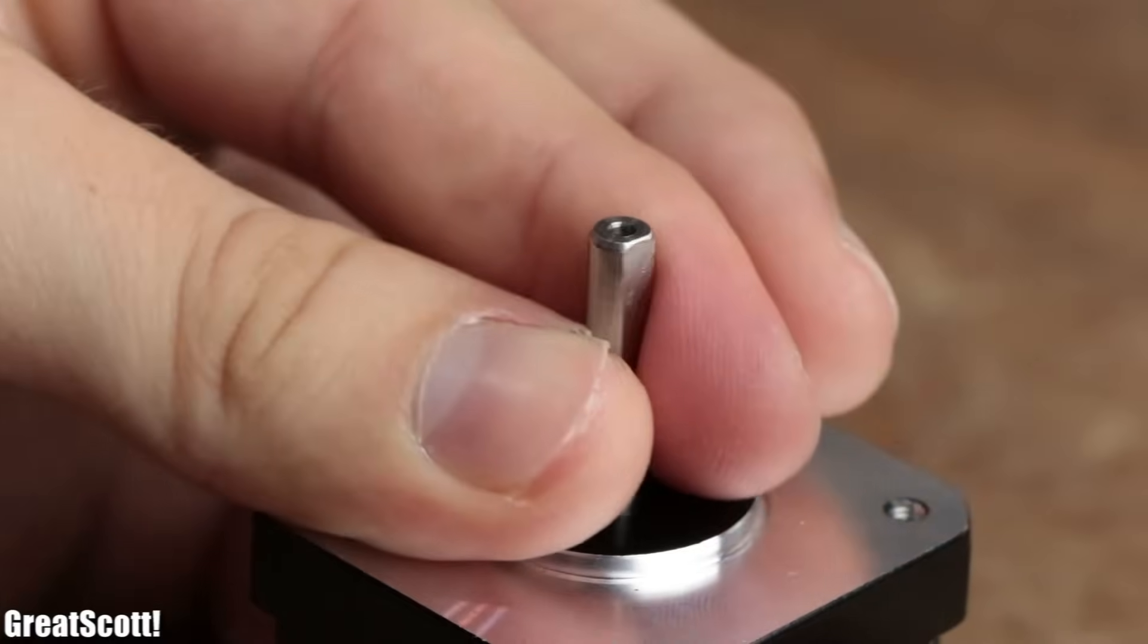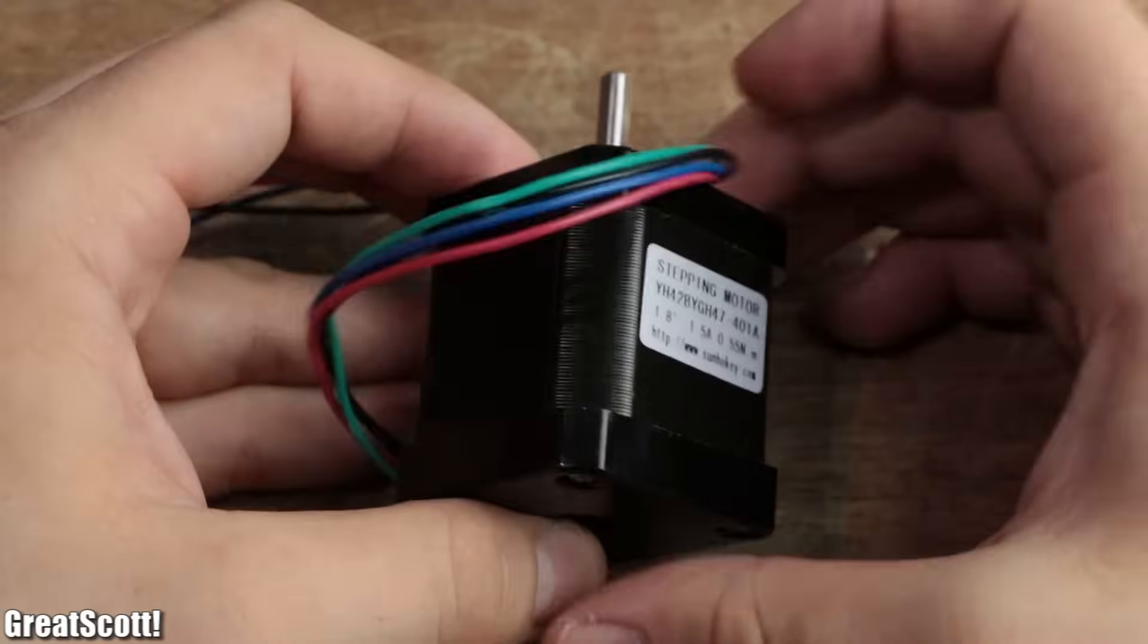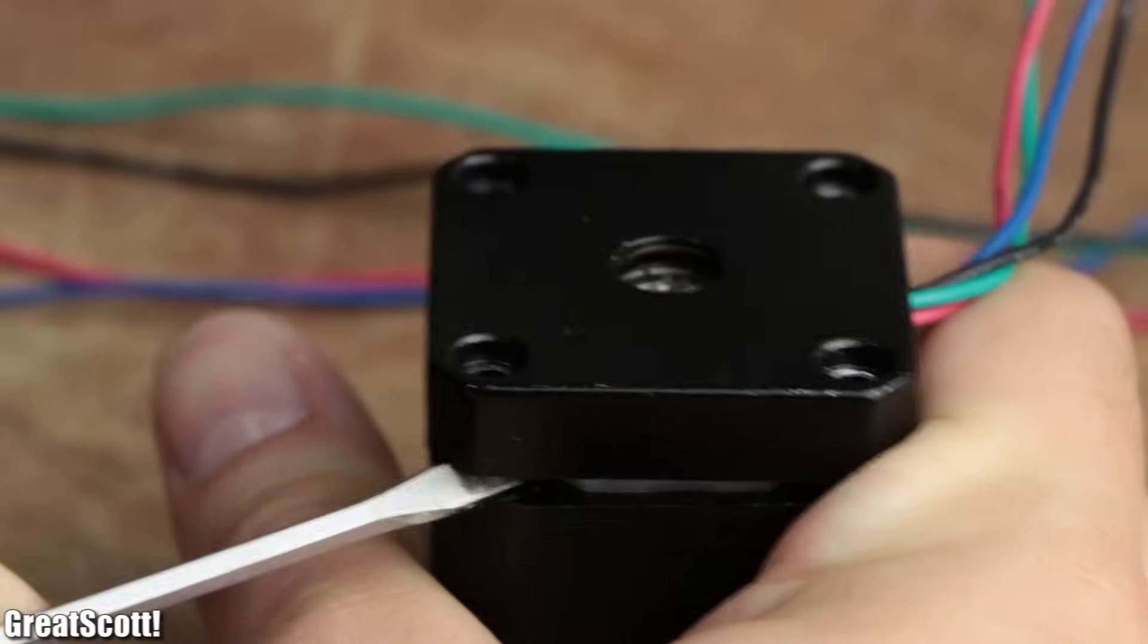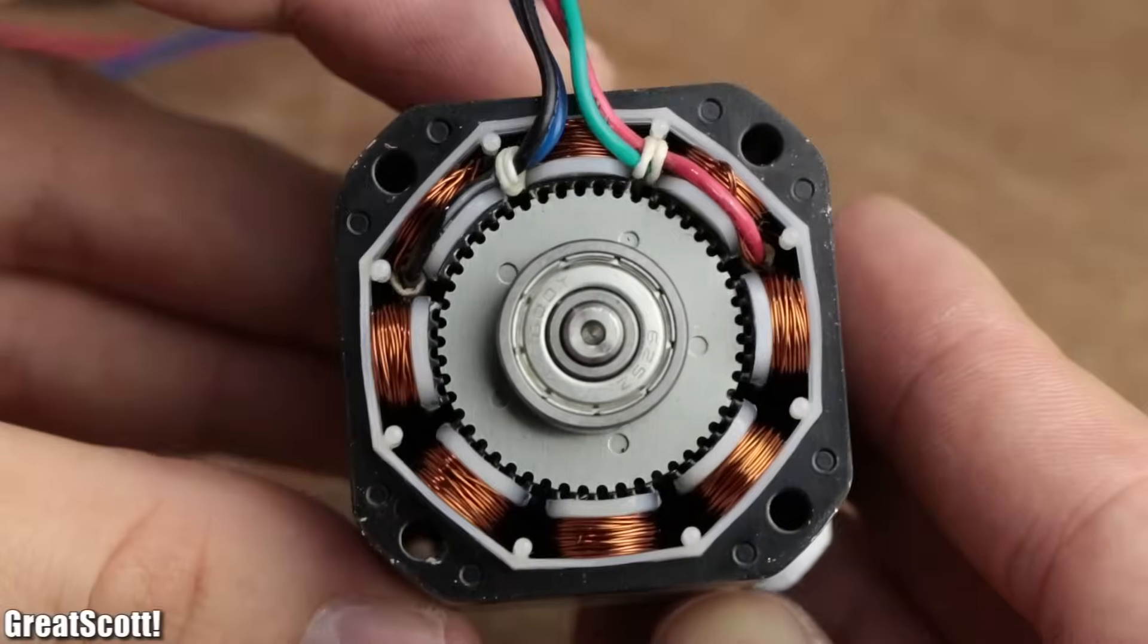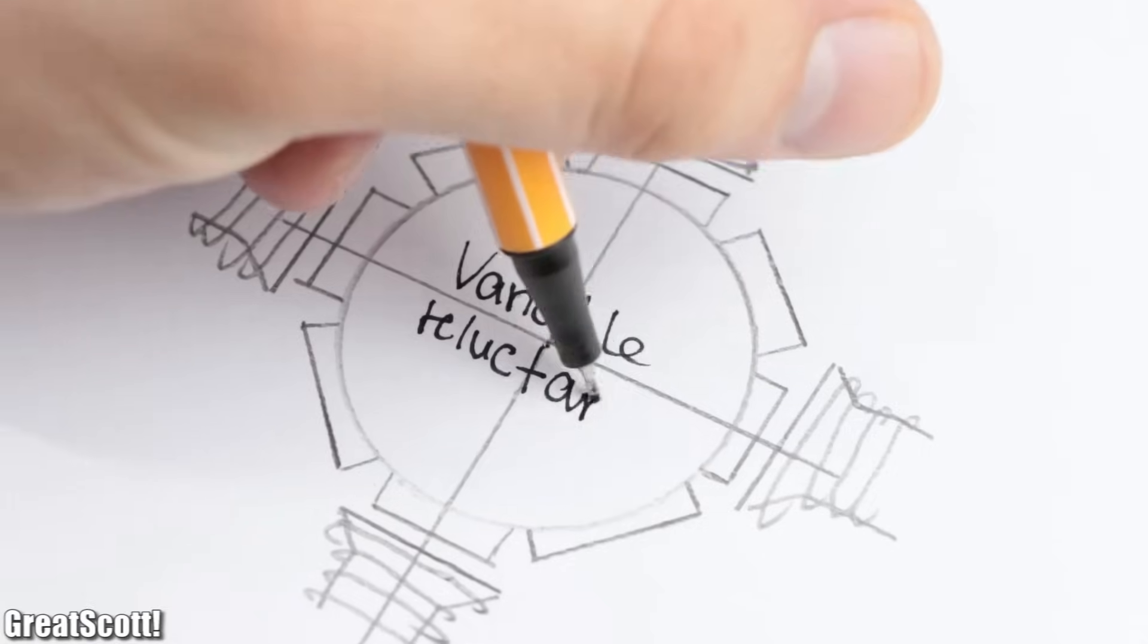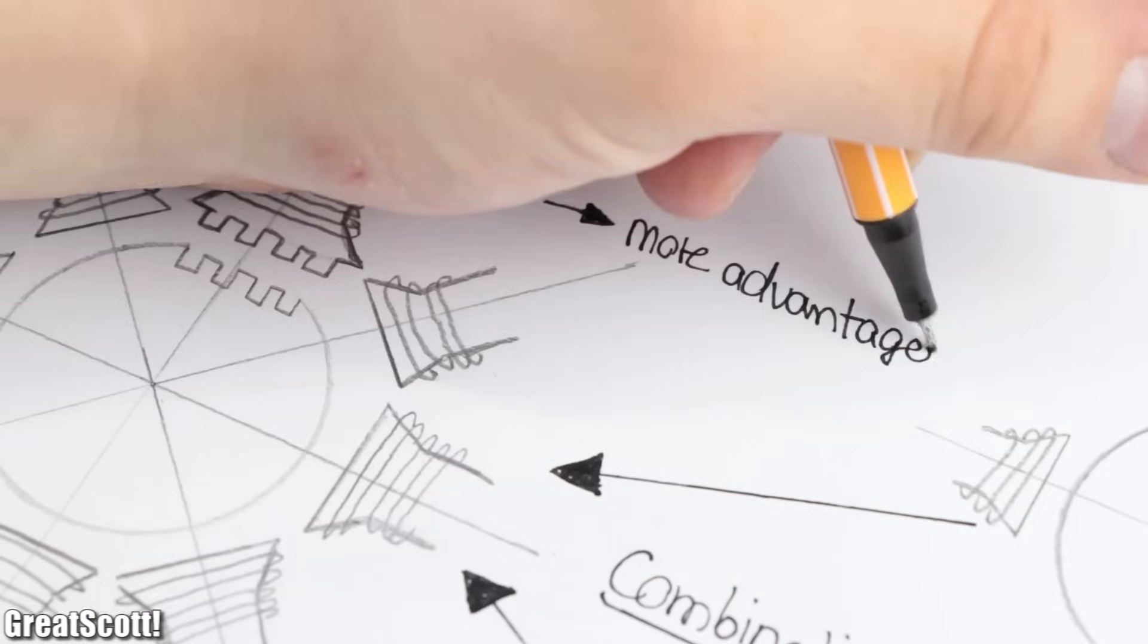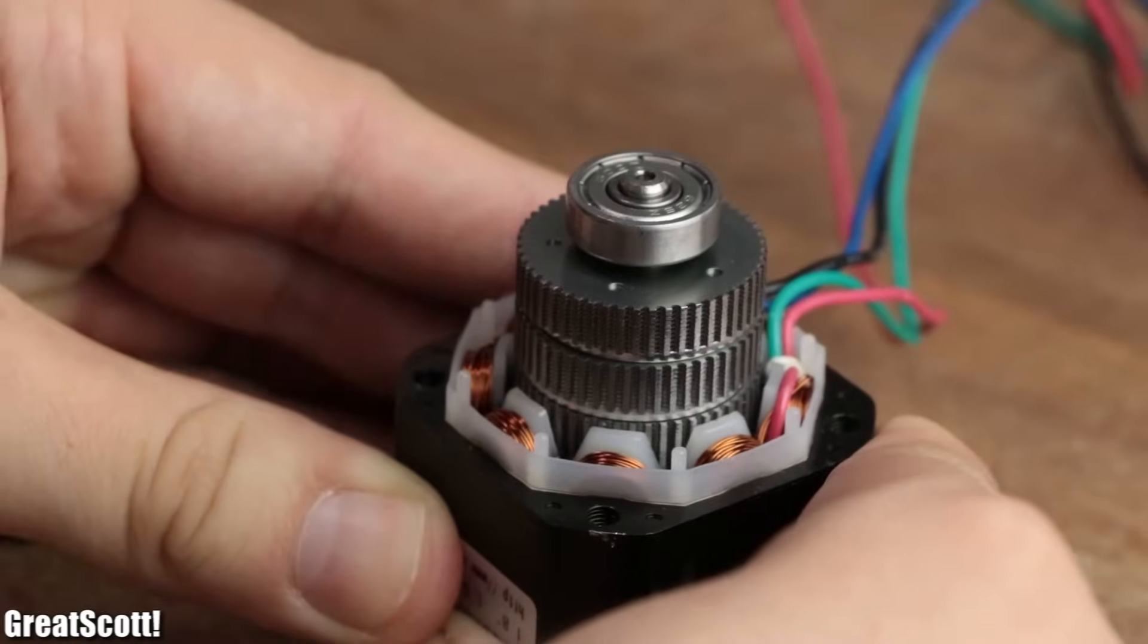First off, let's inspect the inside of the stepper motor that I salvaged from an old 3D printer. By simply unscrewing the four screws on the back and applying a bit of force, I removed the back which revealed a rather commonly known structure of a so-called hybrid synchronous stepper motor. There also exist permanent magnet types and variable reluctance types, but since the hybrid ones have more advantages and are more common nowadays, let's focus on those.